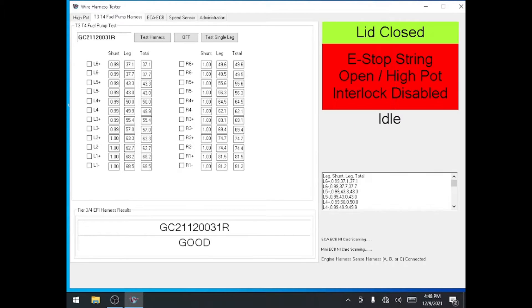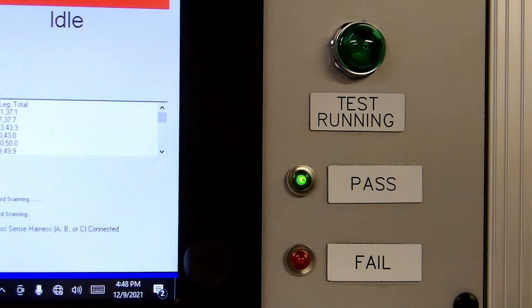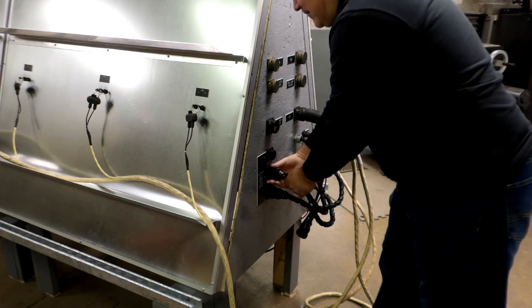Once the test is complete, the software will say good or bad and the corresponding pass or fail light will illuminate on the operator console. Remove the A, B, and C jumper connections on the end of the easel.